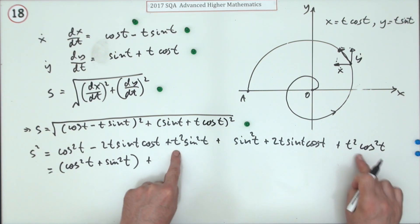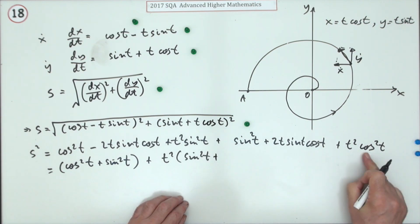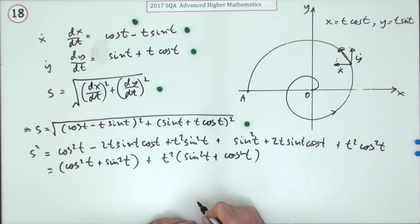These two terms of course cancel out, and then with these two terms there's a common factor of t squared which I'll take out, and you're left with sin squared plus cos squared. And sin squared and cos squared comes to one.